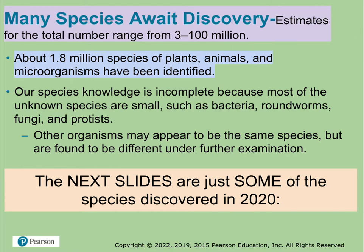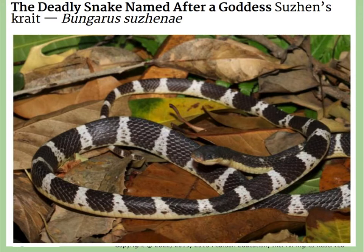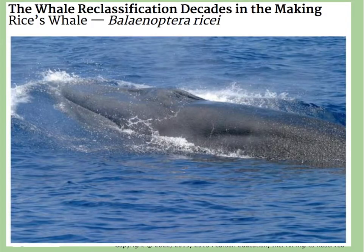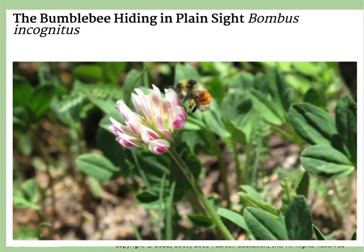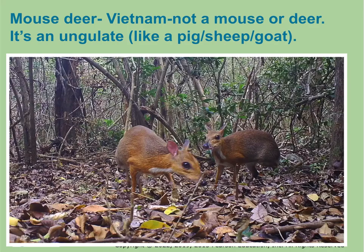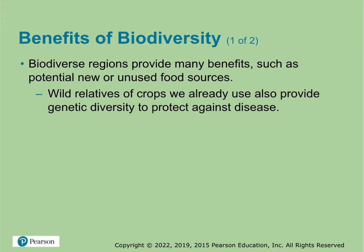There are a lot of species that have not even been discovered yet, which is exciting. There are whole lists of new species — I used the 2020 list because it was finalized. Here is a snake that was found, a rice whale classified as its own species, an orange bat, some insects like ants and a bumblebee, a tiny little chameleon — all were new species discovered in 2020. And this mouse deer, which is actually related more to a pig than a deer.